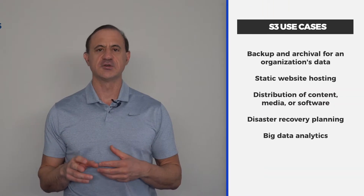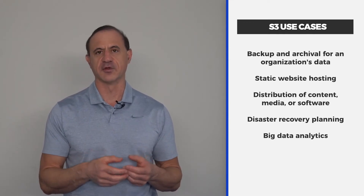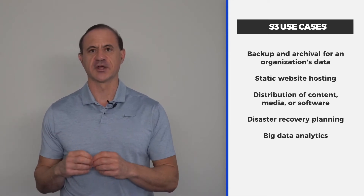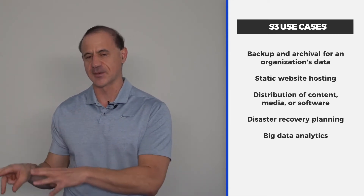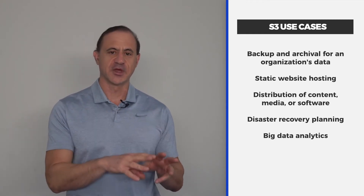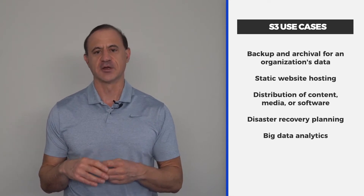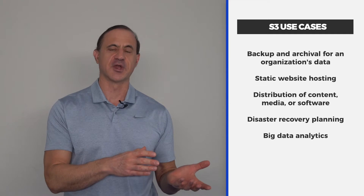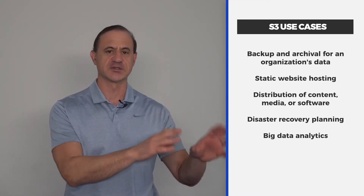Let's talk about some use cases. S3 is used across the platform for backup and archival of instances. You can back up an instance into a snapshot, which is stored on S3. You can back up an EBS volume into a snapshot on S3. Databases, because they're EBS volumes, could also be backed up onto S3 as a snapshot. Additionally, you could back up your data and place it onto S3 even from your organization's on-premise data center.